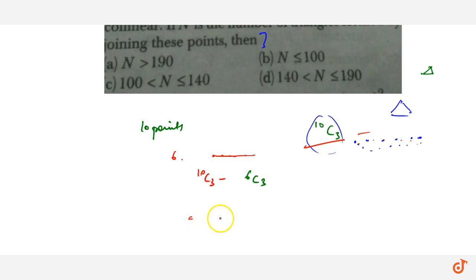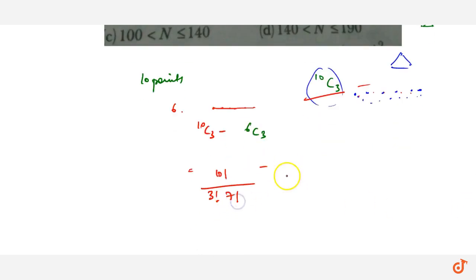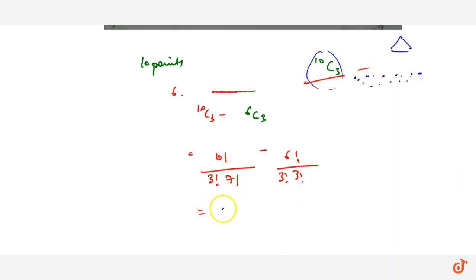Now we have to expand it, then we write it: 10 factorial upon 3 factorial into 10 minus 3, 7 factorial, minus 6 factorial upon 3 factorial into 3, 6 minus 3 factorial, 3 factorial. So we solve it: 120 minus 20, that is 100.